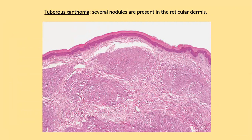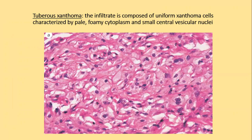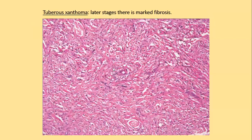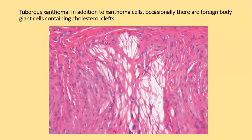Tuberous xanthomas appear as several nodules within the dermis. At higher magnification these nodules are occupied by numerous xanthoma cells, which are macrophages with foamy cytoplasm due to lipid deposition. In later stages there is marked fibrosis, which accounts for the hard consistency of these nodules. In addition to xanthoma cells, occasionally there are foreign body giant cells containing cholesterol clefts.